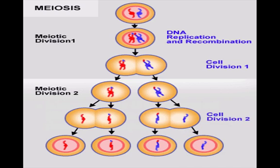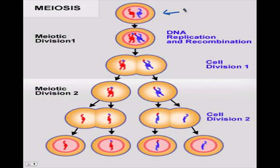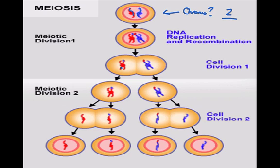Here's how it produces 4 cells. If you look up here at the top, you start out with a cell — how many chromosomes does this cell have in it? If you answered 2, you're right: there's a red one and a blue one, so it has 2 chromosomes. It goes through interphase and it doubles, so now there are 4 chromosomes.